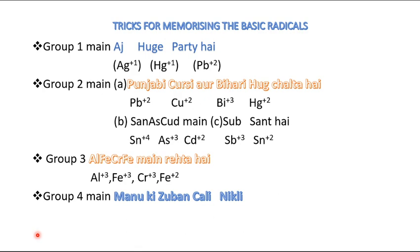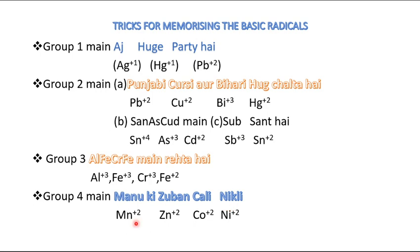This is Group 4. The trick I use is the phrase 'Manu ki zuban kaali nikli,' taking the first words. Manu stands for Mn2+ (manganese dipositive), zuban is for zinc (Zn2+), kaali is for cobalt (Co2+), and nikli is for nickel (Ni2+).